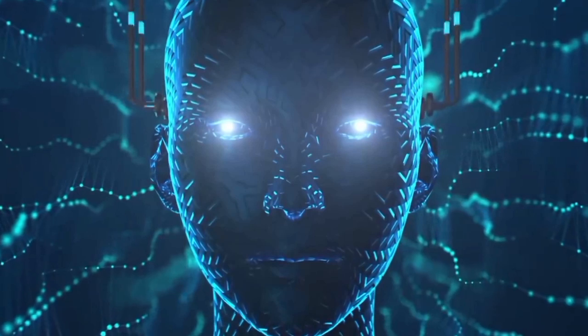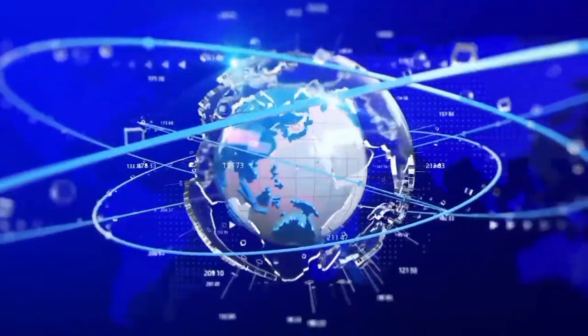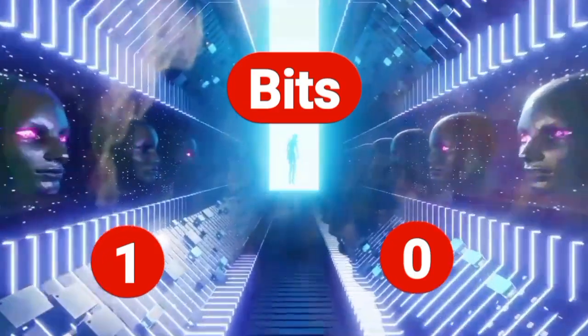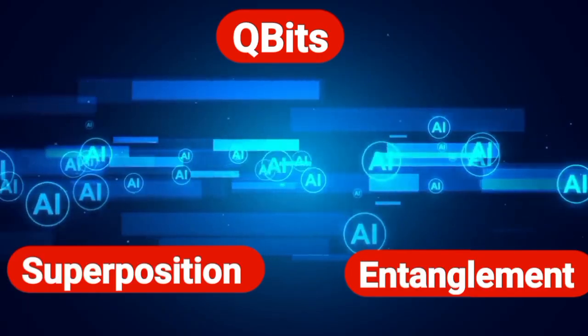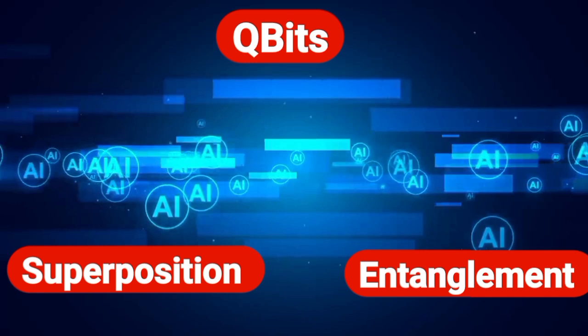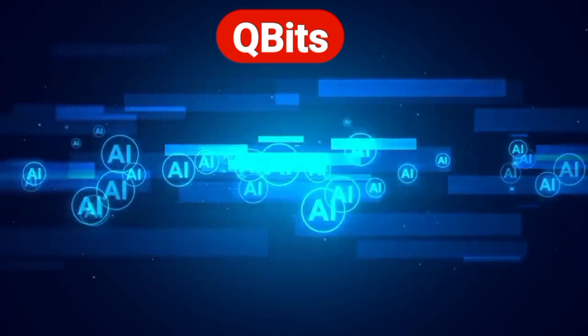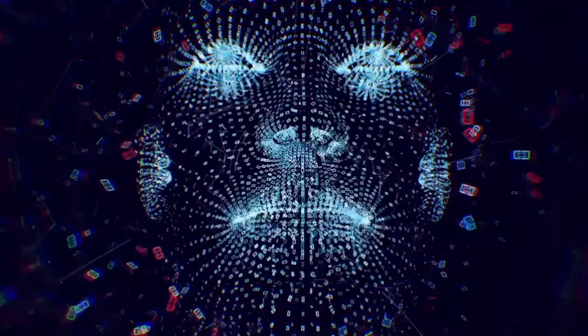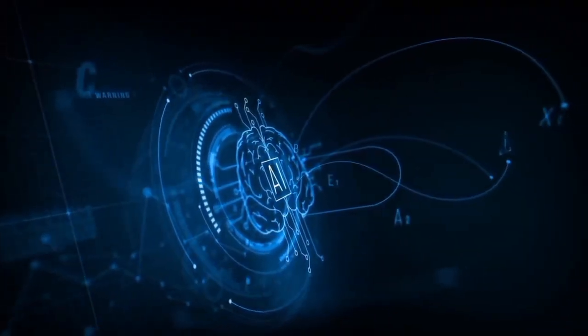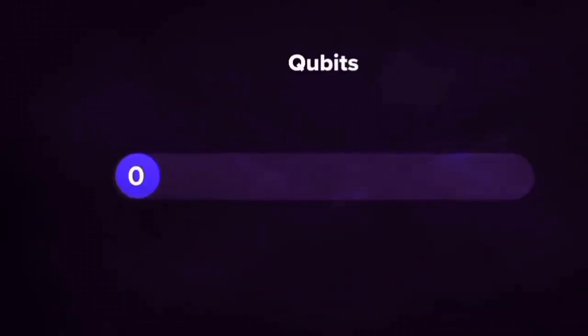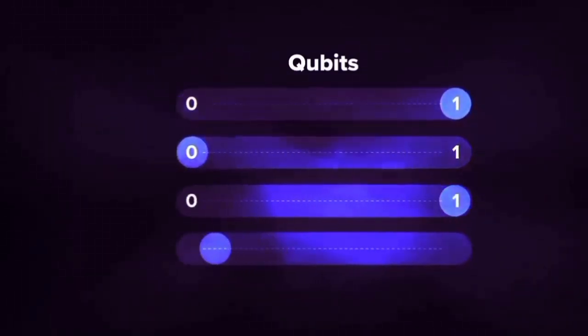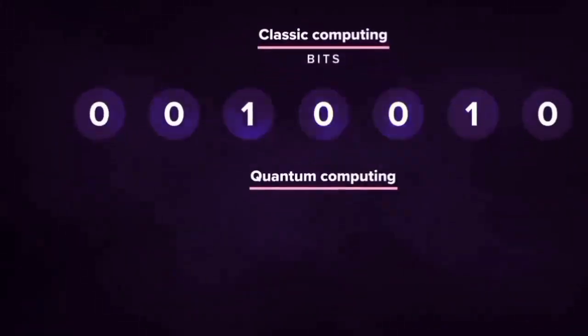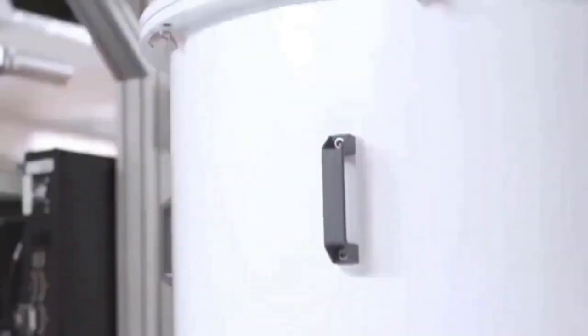Before we get into the specifics of Willow, let's quickly review the basics of quantum computing. While classical computers rely on bits to represent information as either 1 or 0, quantum computers use qubits. These qubits leverage the strange properties of quantum mechanics like superposition and entanglement to perform computations in ways that classical computers cannot.